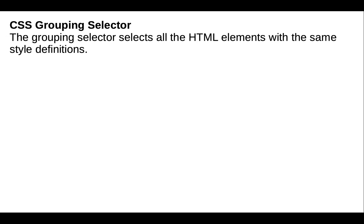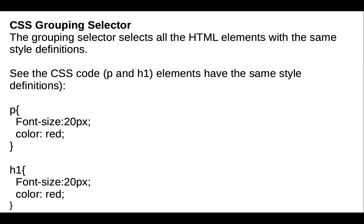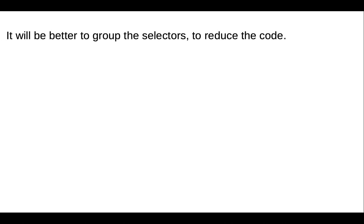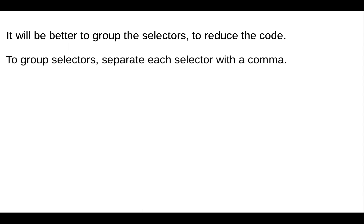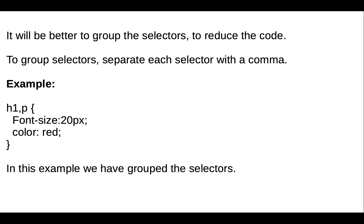Next is the CSS grouping selector. The grouping selector selects all HTML elements with the same style definition. If P and H1 elements have the same style definition, we can group them to reduce code. To group selectors, we separate each selector with a comma. For example, we can write H1 and P in a single line.